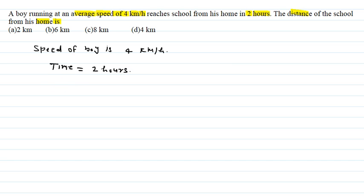We can find distance using the formula. Speed is equal to distance upon time. Since speed is 4 and time is 2 hours, distance is equal to 4 into 2.